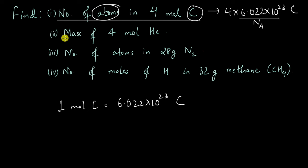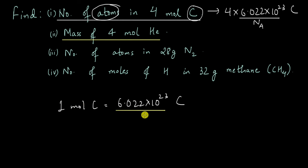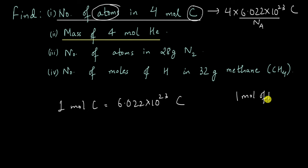The next question is to find the mass of 4 moles of helium. Here we are relating mass with moles, and this is a very important concept. This will help us understand why we defined the mole to be this number — 6.022 × 10²³. Why this? Why not anything else?